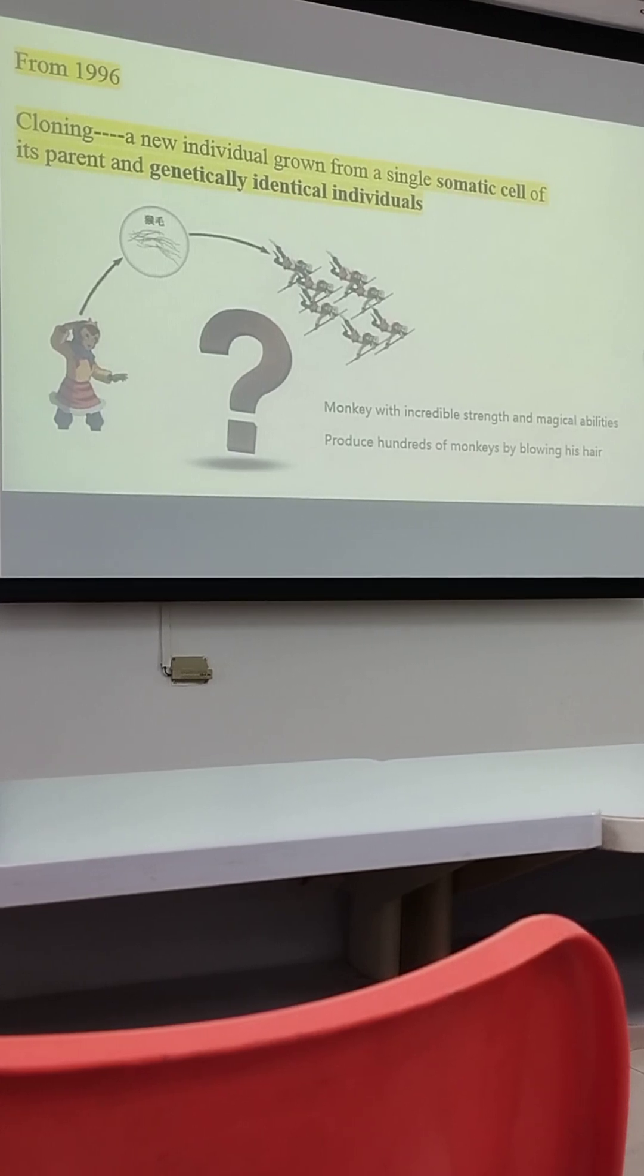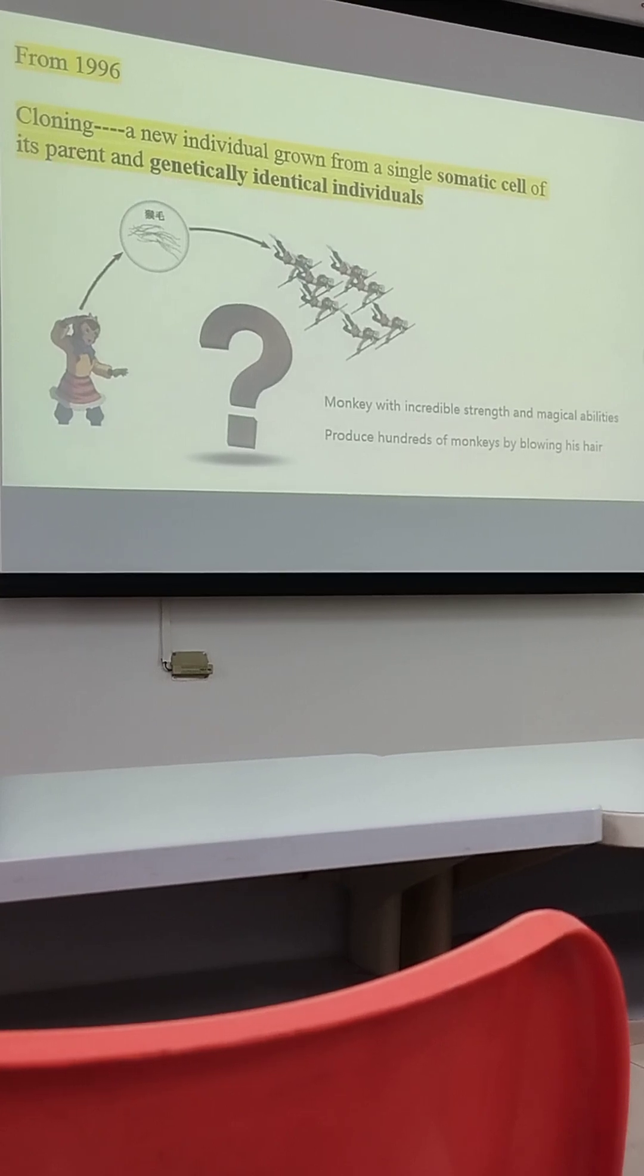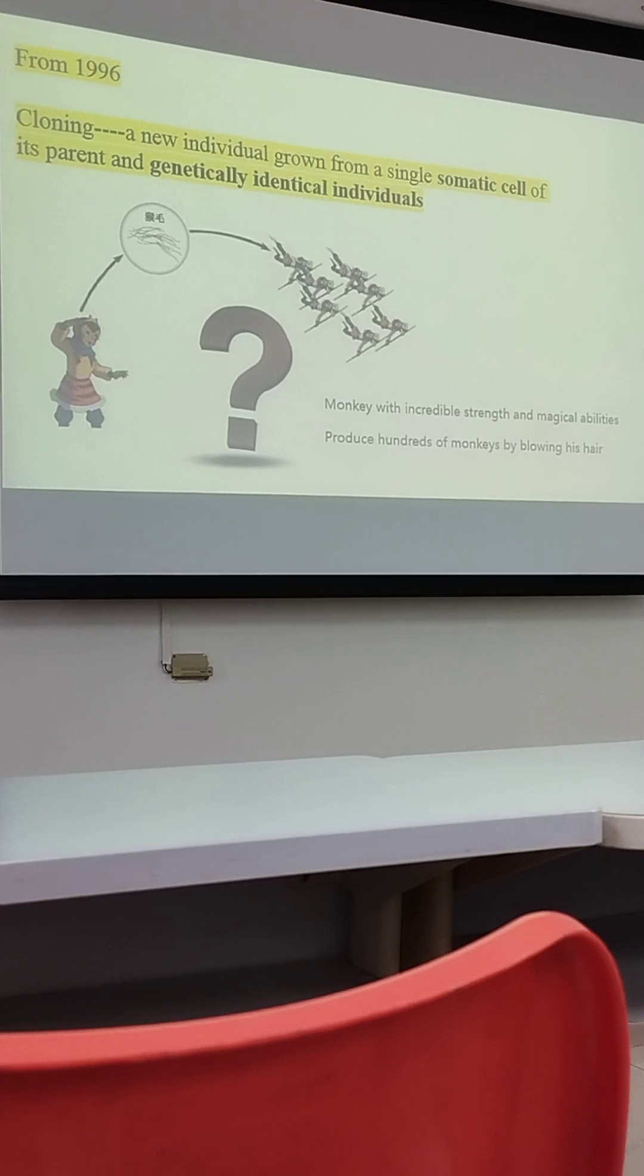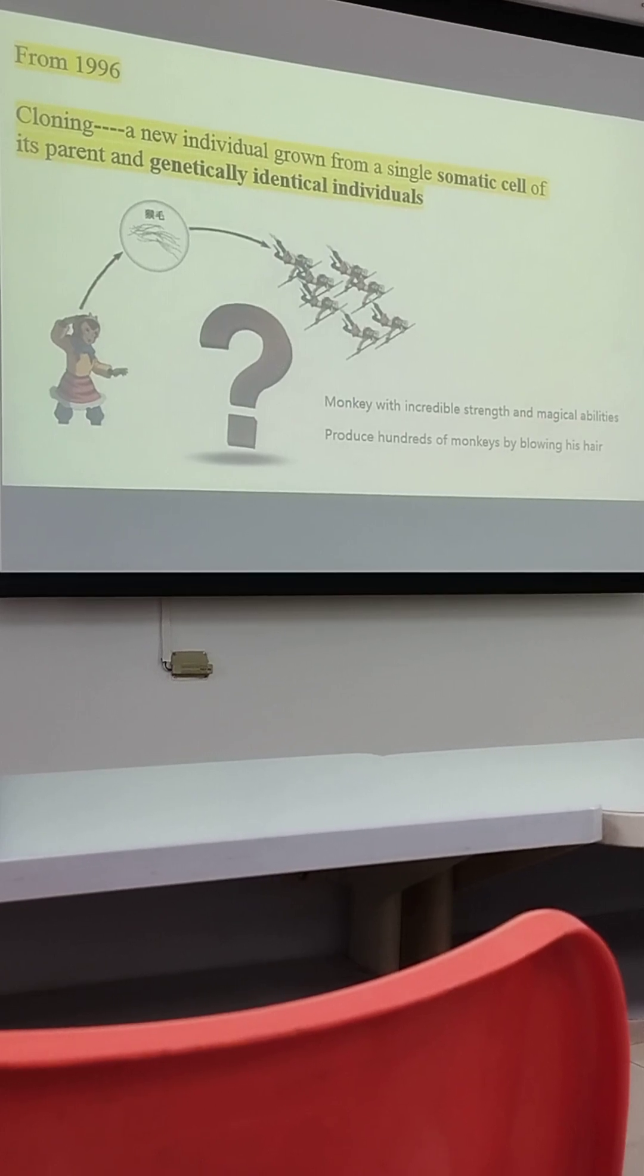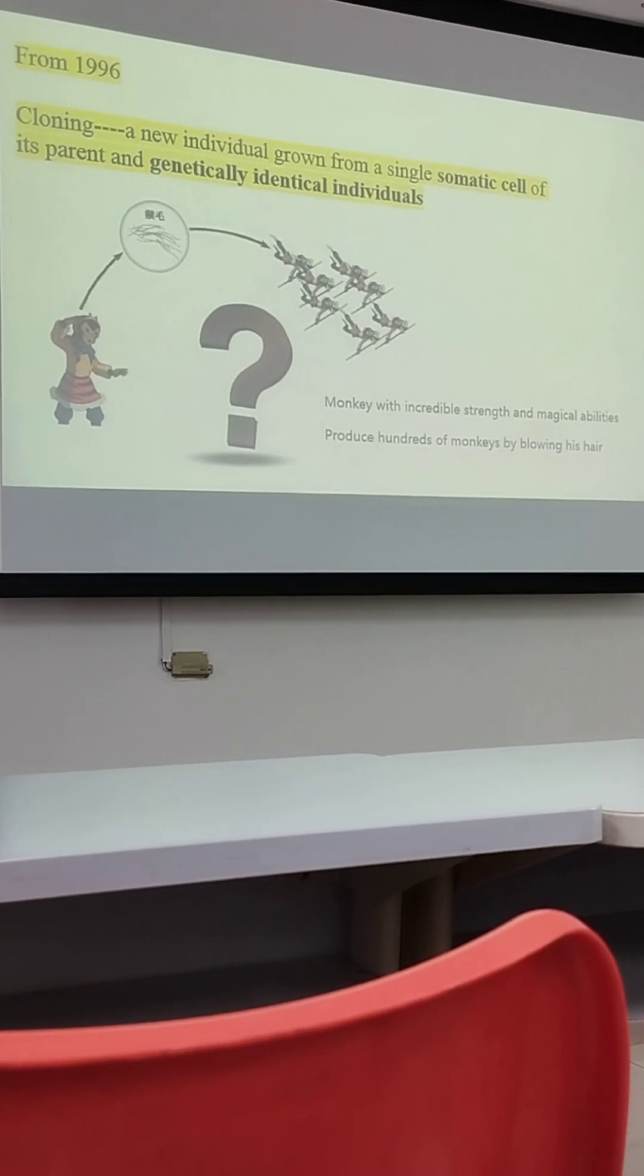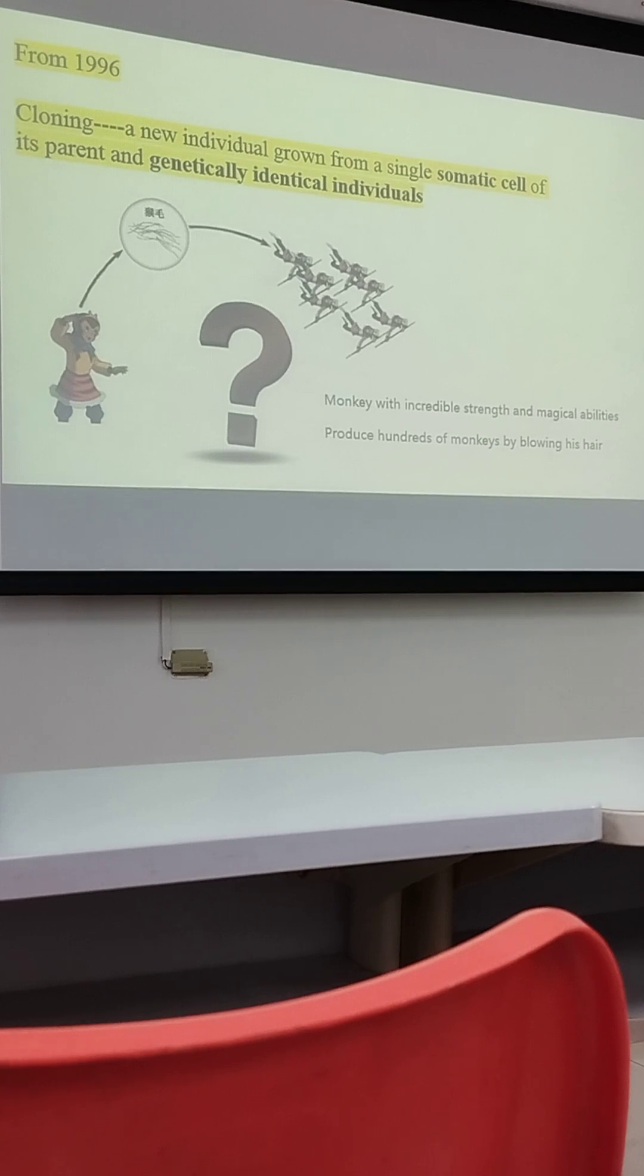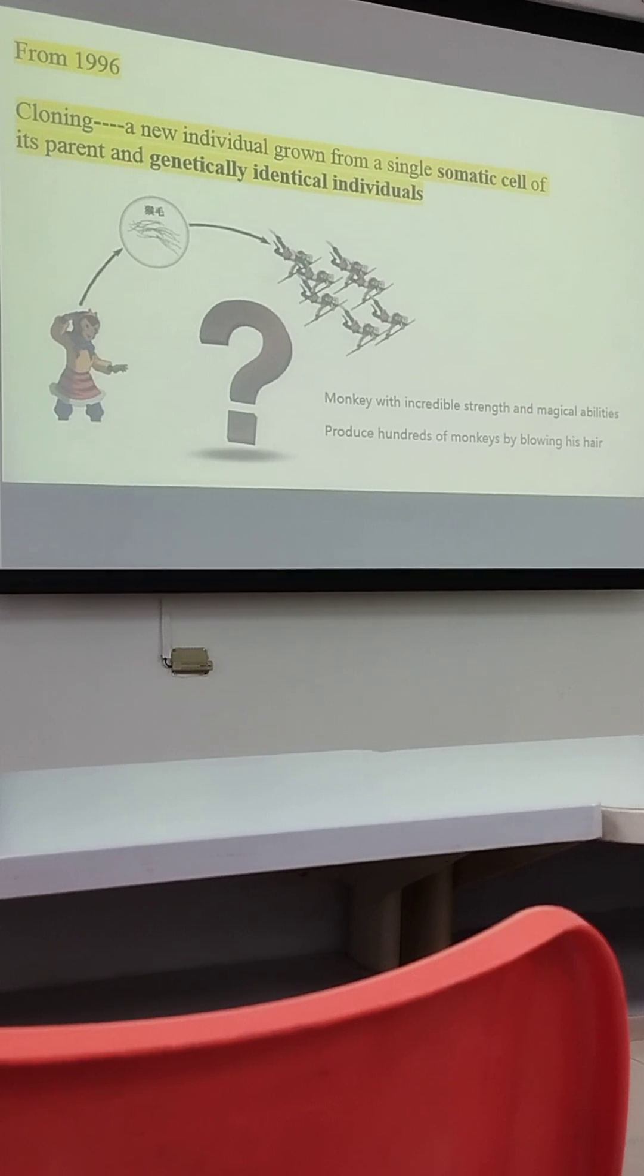So this monkey, with his hair, just blows it and can produce hundreds, thousands of individuals like him, and fight with the evil monsters. So that is the interesting thing. So that's the first time Chinese people think about, okay, can we just use the somatic cell to produce identical individuals? Is it real? It's not real, actually. Not real. This is a novel.